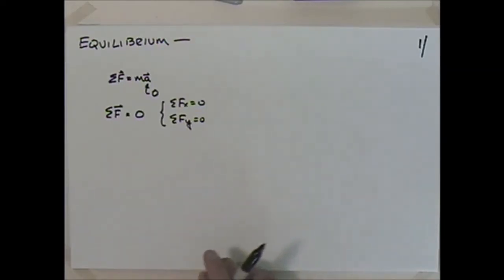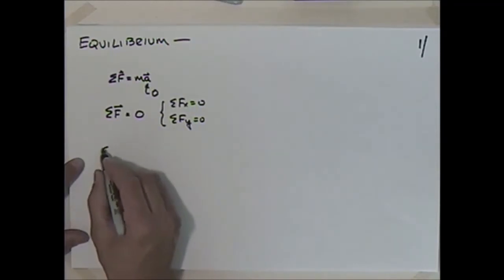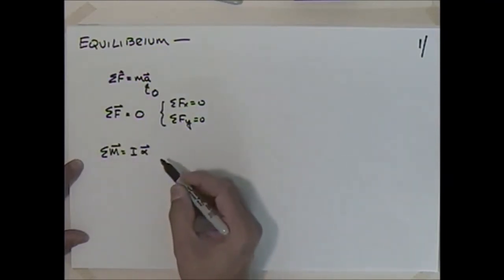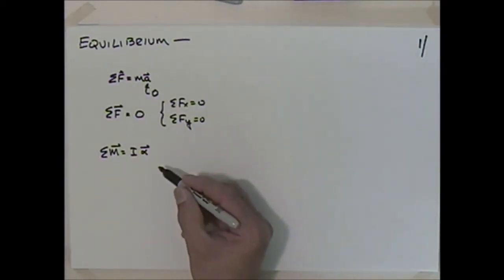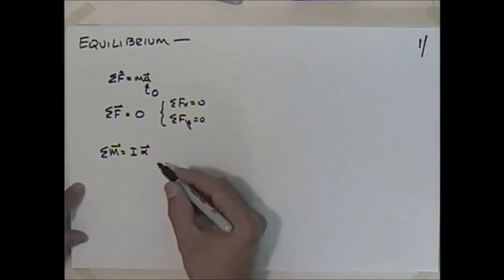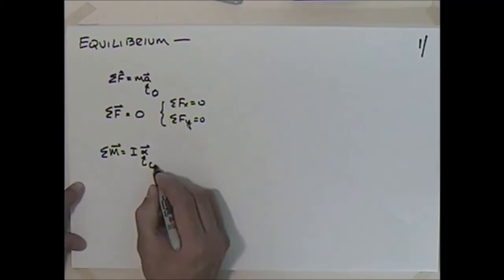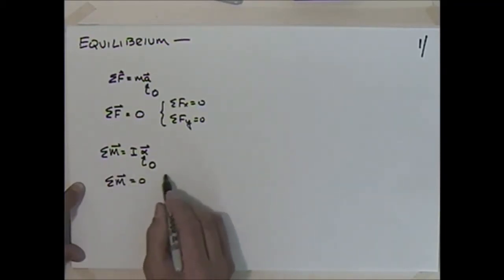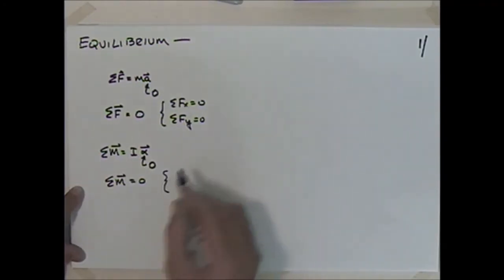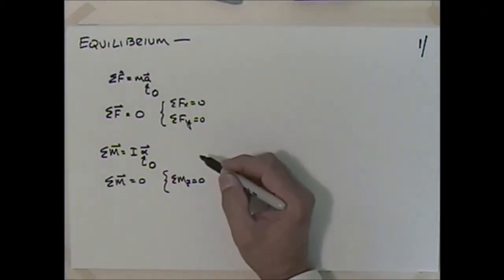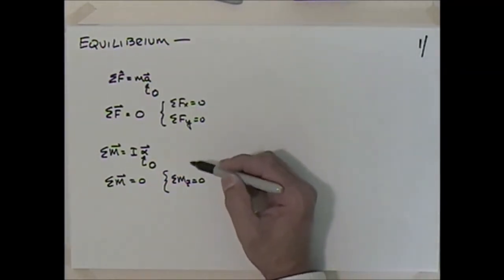We can also do the z-direction, which we'll talk about later in both two and three dimensions. We could also write that the sum of moments equals the mass moment of inertia I times the angular acceleration alpha. If something is rotating at constant velocity, alpha equals zero, giving us the sum of moments equals zero — most commonly about the z-axis, or the axis coming out of the paper. So those are our equilibrium equations.